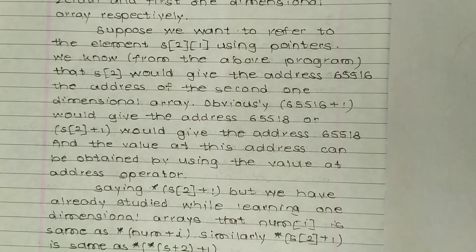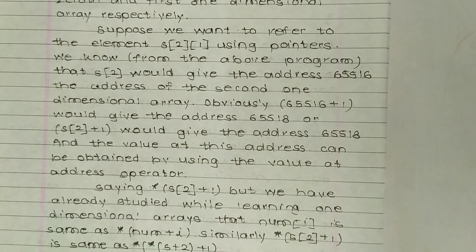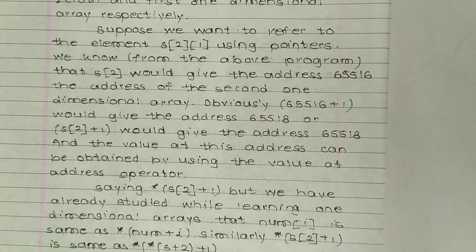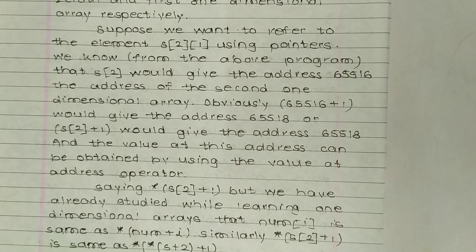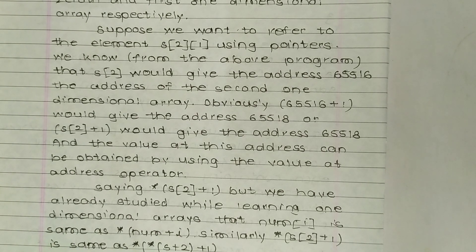Suppose we want to refer to element s[2][1] using pointers. We know from the program that s[2] gives the address 65516 — the address of the second one-dimensional array. Obviously, 65516 plus one gives address 65518, so s[2]+1 gives address 65518. The value at this address can be obtained using the value-at-address (dereference) operator.